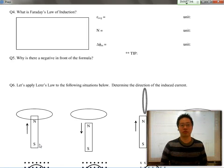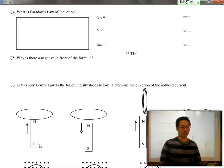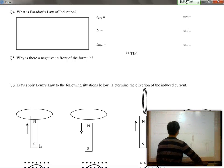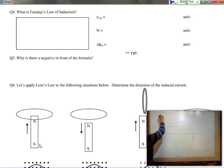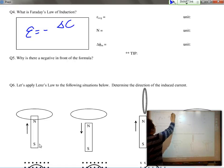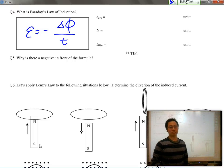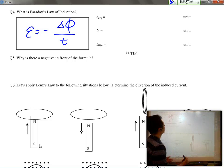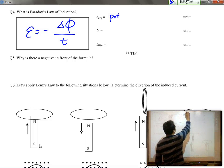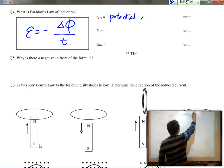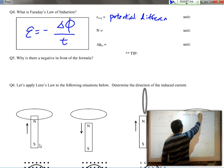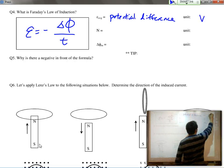So the formula we're going to talk about today is Faraday's law of induction which basically says that any sort of EMF can be generated by a change in magnetic flux over time. EMF of course is just another way of saying potential difference. So the unit is going to be volts.